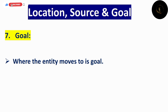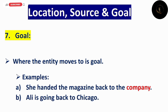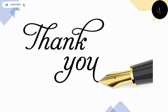Source اور goal ملتے جلتے ہیں۔ Source جہاں سے چیز حاصل کی گئی، اور goal جہاں اس چیز نے واپس جانا ہے، یعنی entity کس طرف move کرنی ہے۔ 'She handed the magazine back to the company' — back to کا مطلب وہ دوبارہ جا رہی ہے، company کی طرف، so company is goal۔ 'Ali is going back to Chicago' — entity Chicago کی طرف move کر رہی ہے، so Chicago is goal۔ So these were seven semantic roles۔